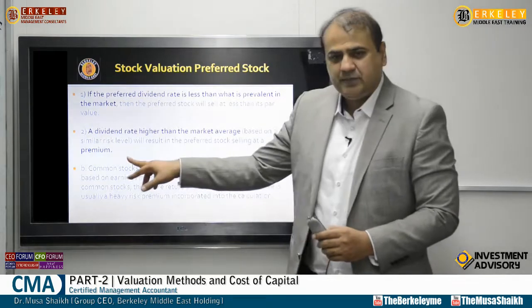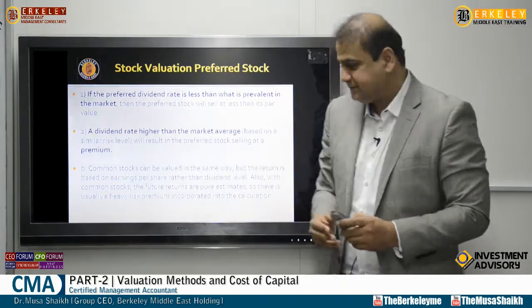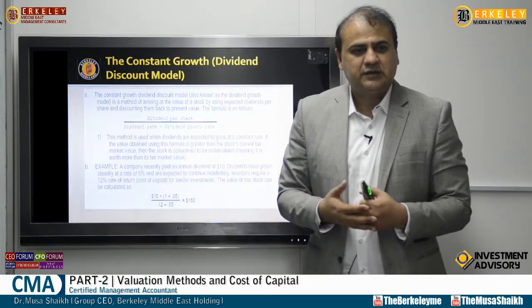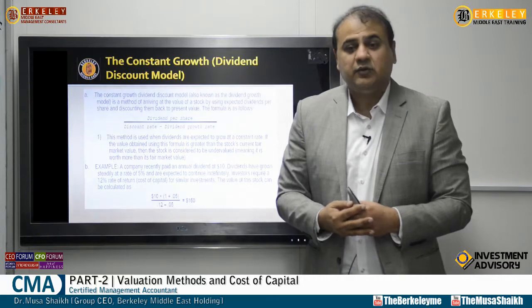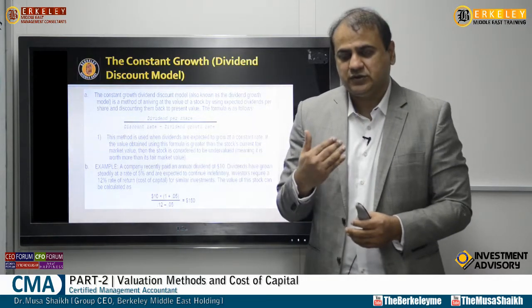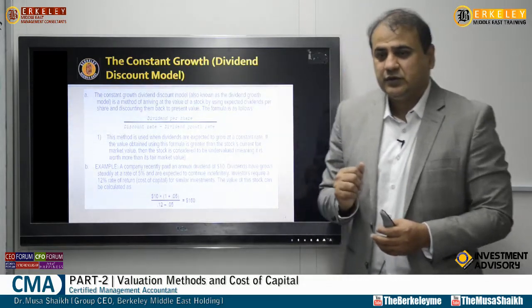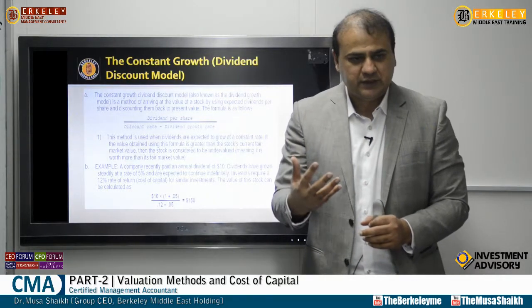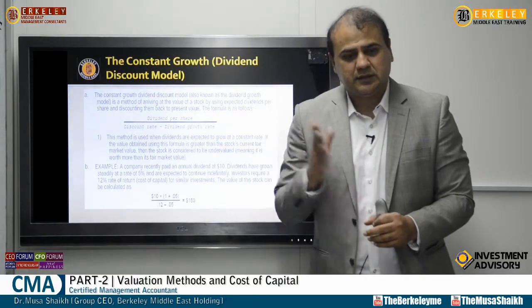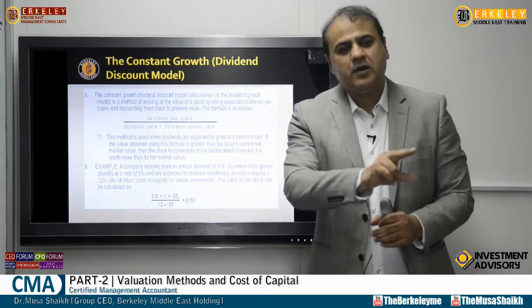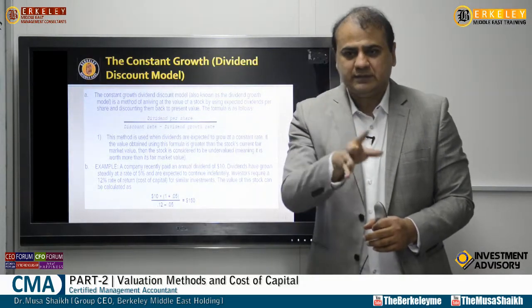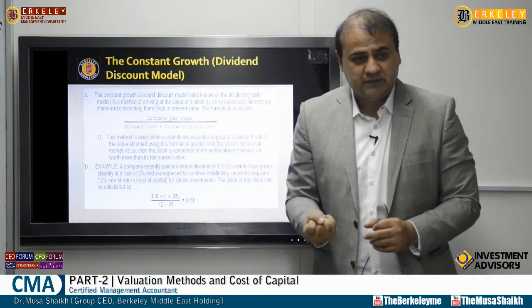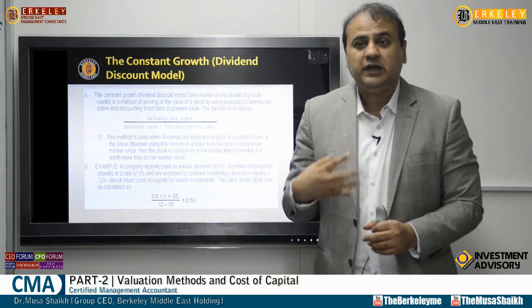A dividend rate higher than the market average will result in a preferred stock selling at a premium, and vice versa — a discount. As CMAs, if our company is a listed or public limited company, we will frequently deal with preference stock, ordinary stock, and bonds. Dividend represents the return to shareholders, so whether it is steady, growing, or fluctuating is very important — shareholders may pull out their money if dividends are insufficient.